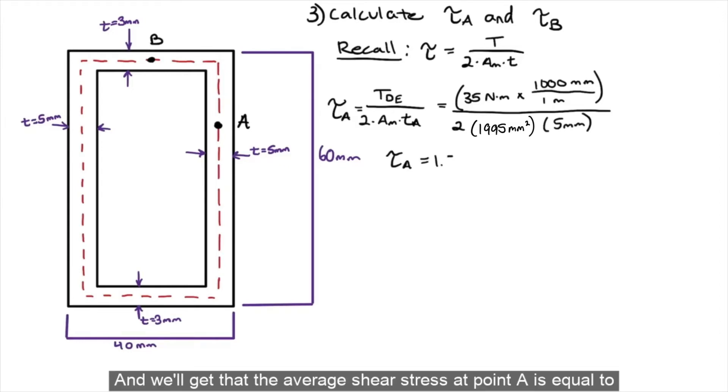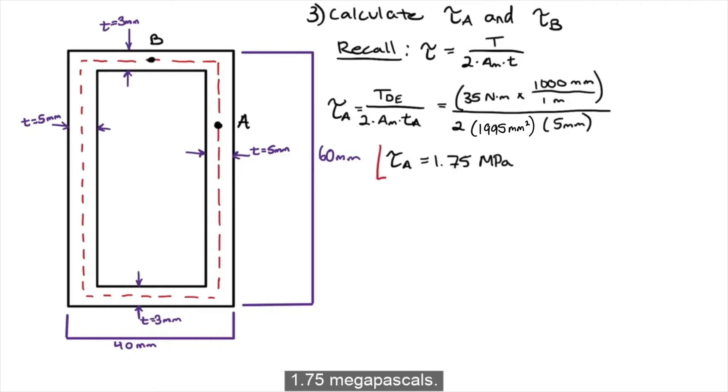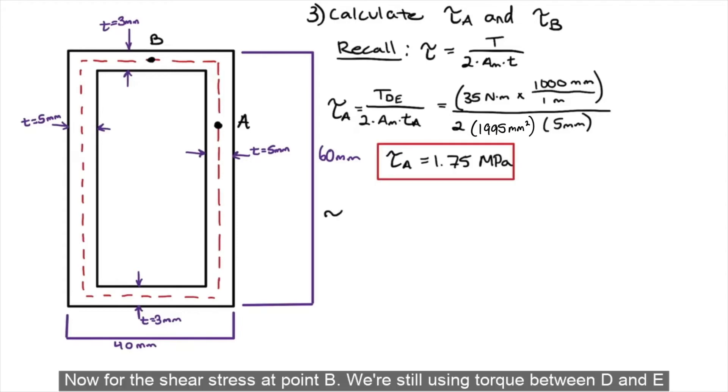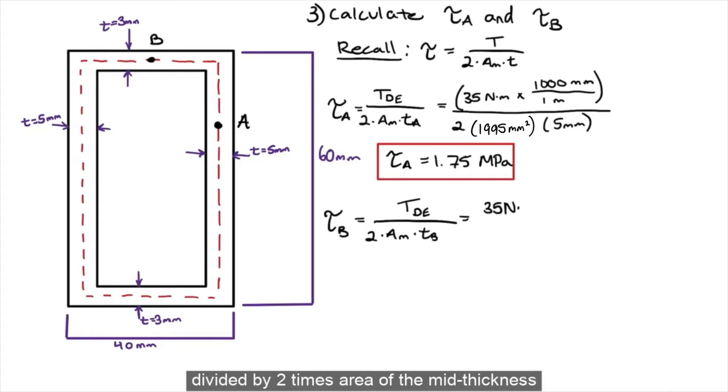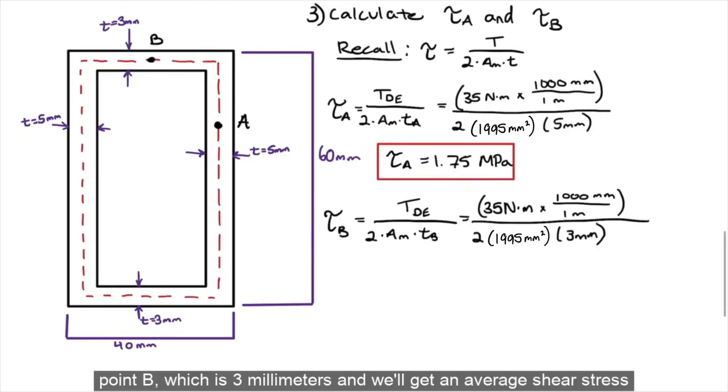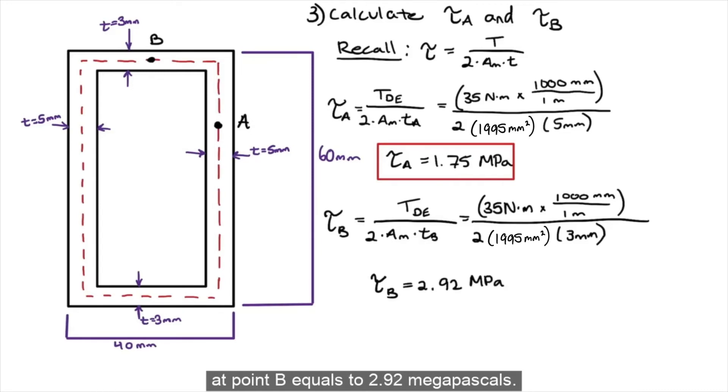And, we'll get that the average shear stress at point B equals to 2.92 megapascals.